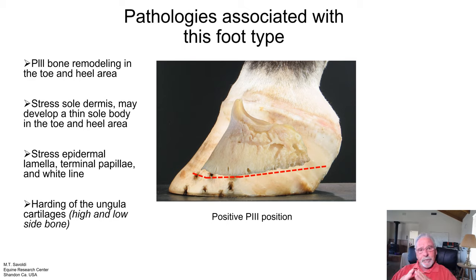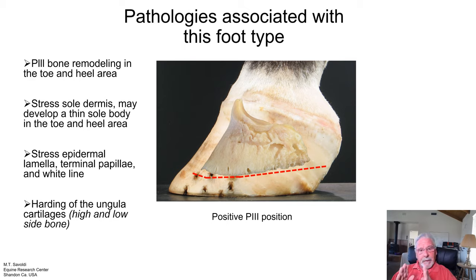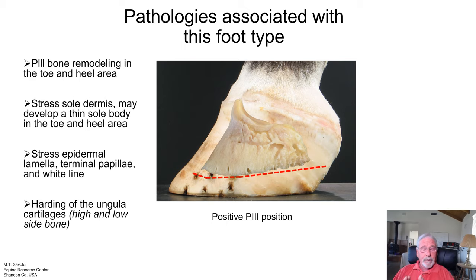When a horse has straight bars — straighter bars like this one would have — straight bars mean narrow heels. Narrow heels mean that the wall is migrating towards the bone and the cartilages, so there's more stress onto those cartilages.